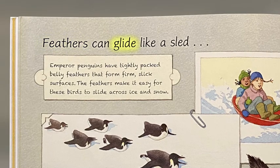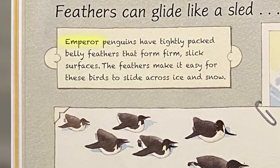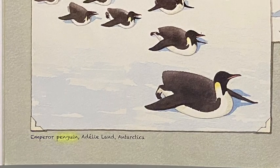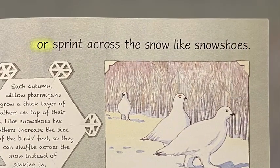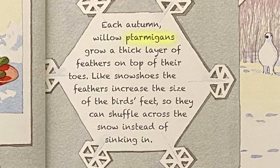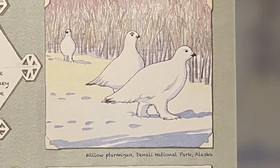Feathers can glide like a sled. Emperor penguins have tightly packed belly feathers that form firm, slick surfaces, making it easy for these birds to slide across ice and snow. Or sprint across the snow like snowshoes. Each autumn, willow ptarmigans grow a thick layer of feathers on top of their toes. Like snowshoes, the feathers increase the size of the bird's feet so they can shuffle across the snow instead of sinking in.